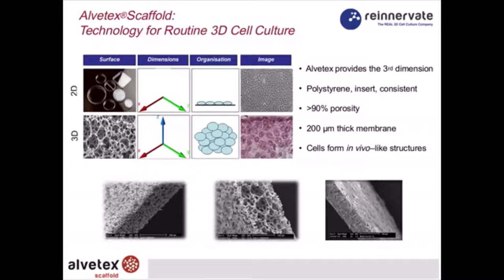Scanning electron micrographs show the structure of Alvitex. Alvitex is engineered into a 200-micron thick membrane. It is highly porous — most of that volume is space within the membrane. Cells can readily enter the material, and in the bottom right image you can see a scaffold which is now full of cells, essentially making a slab of tissue in the bottom of your vessel. Within that, the cells are all growing in 3D with each other.